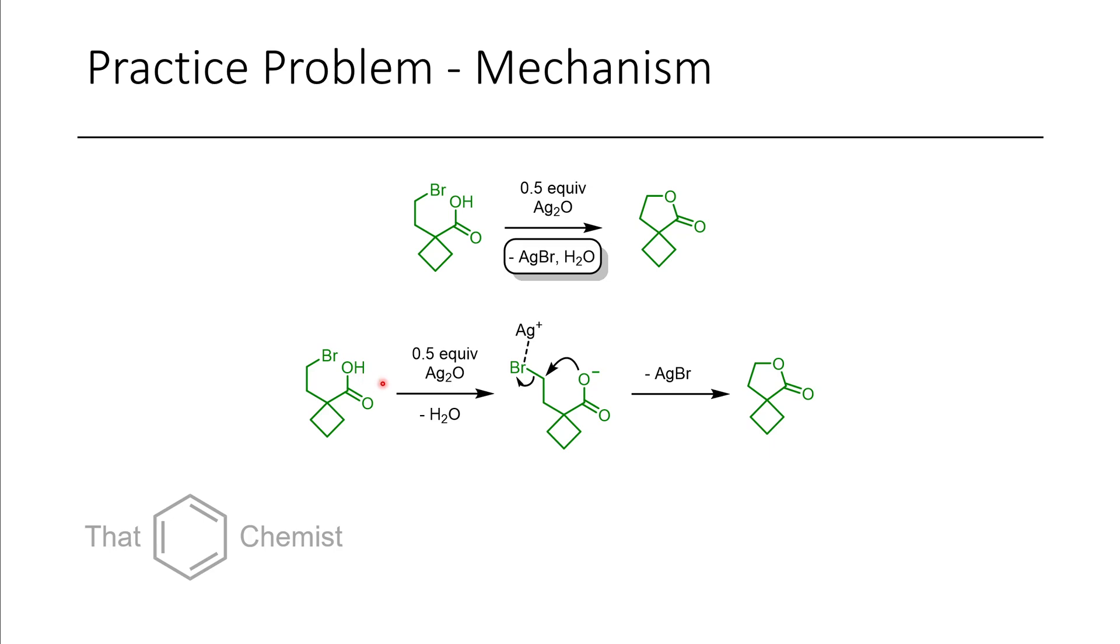The water is formed through the deprotonation of the carboxylic acid. Because only one equivalent, only one silver is required for this reaction, 0.5 equivalents of silver oxide are used, and so we'll initially get hydroxide, but this hydroxide will go and react with another molecule, so ultimately water would be formed. And then with silver bromide, same thing. Silver bromide forms because there's only one silver really being used.